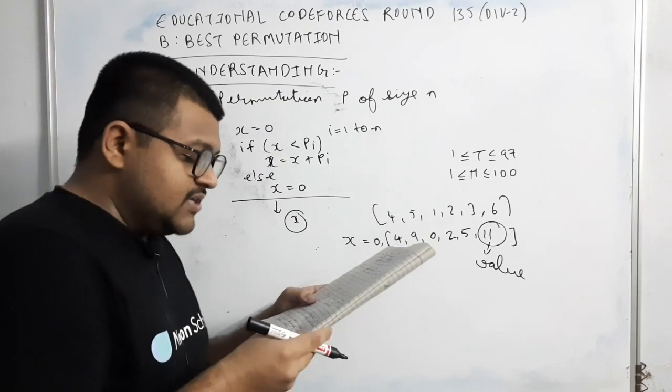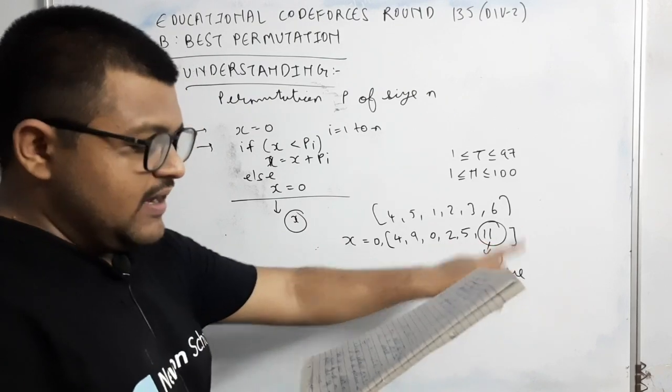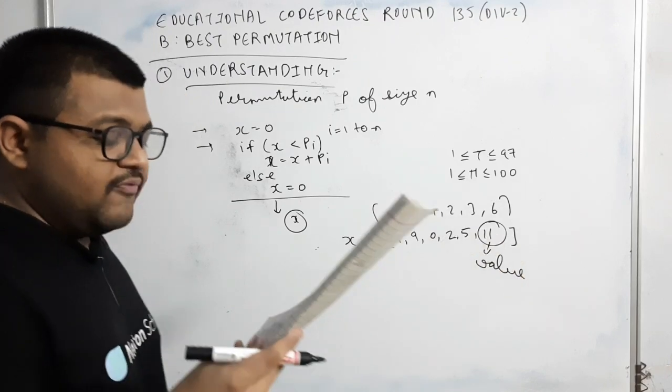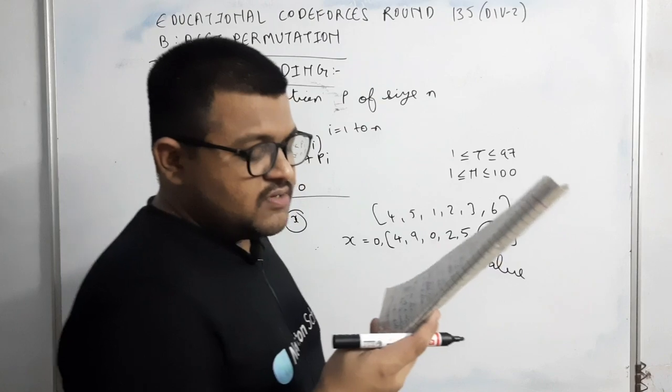So the final value of x is 11 which is also the value of the permutation p of size n. x changes as follows: 0, 4, 9, 0, 2, 5, 11. So the value of the permutation is 11. You are given integer n, find permutation of size n with maximum possible value.